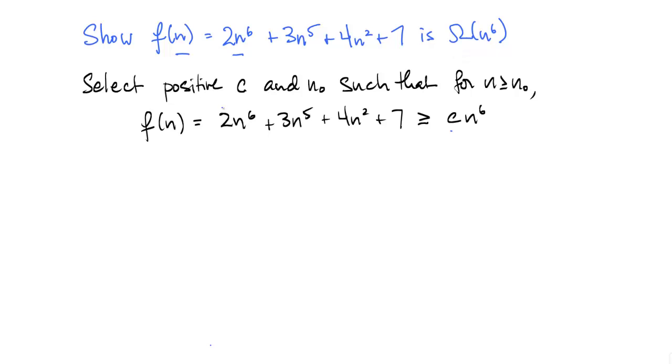According to the definition of omega, we need to find positive constants c and n₀, such that for any n greater than or equal to n₀, the function f is at least c times n to the 6.